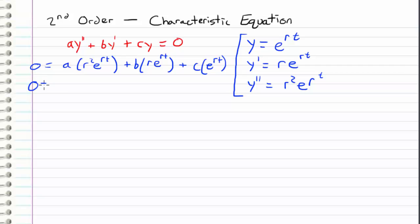So let's go ahead and factor out an e to the rt out of everything. So we get e to the rt times ar squared plus br plus c, and now we're going to use this to solve for r.